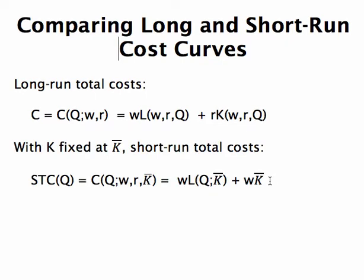In the short run, the firm is stuck with its bricks and mortar investments with specially designed machinery. Given K bar, the firm chooses the minimum level of L needed to produce Q.